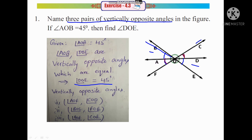The second pair: angle BOC and angle FOE are vertically opposite angles. The third pair: angle BOF and angle COE are also vertically opposite angles. So that gives us three pairs of vertically opposite angles in the figure.